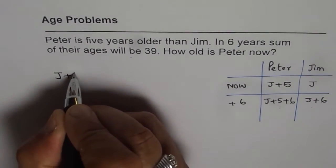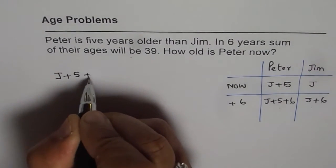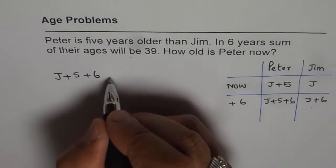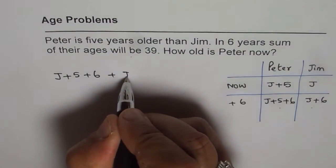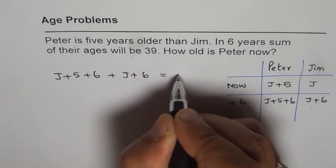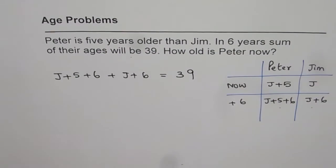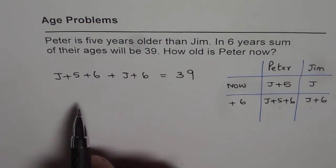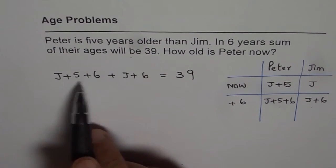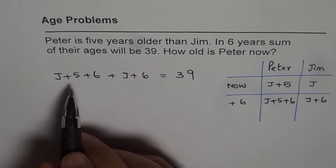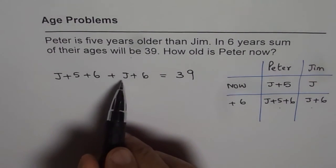So we have J plus 5 plus 6 plus J plus 6 is equal to 39. That is how we get our equation. This equation is in a single variable, so we can always find J from here.